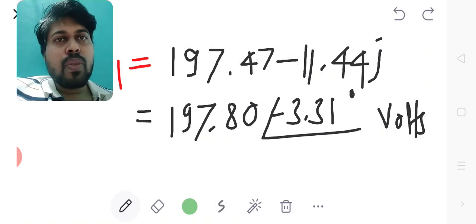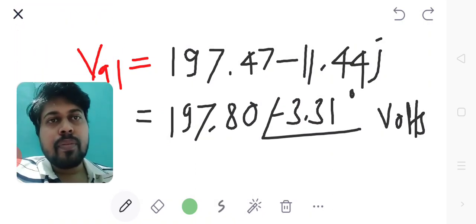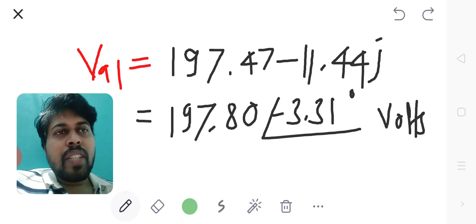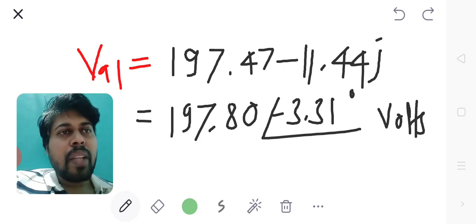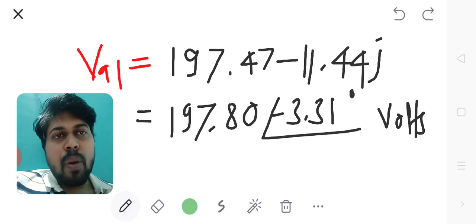VA1 equals 197.47 minus 11.44j in rectangular form, as well as in polar form 197.80 at angle minus 3.31° volts.